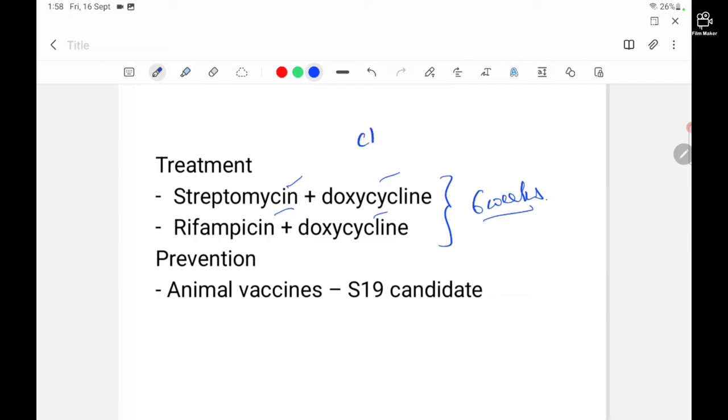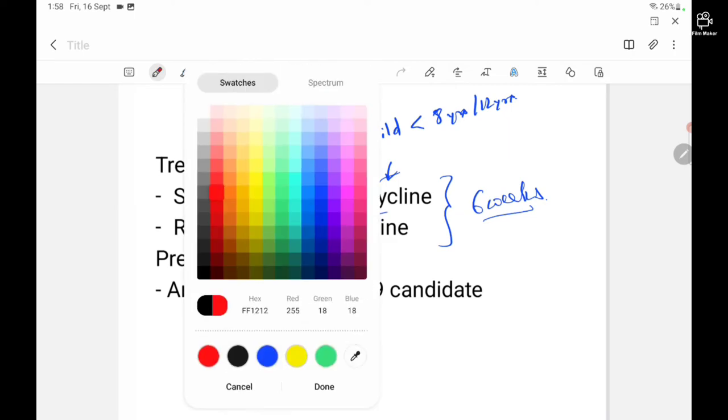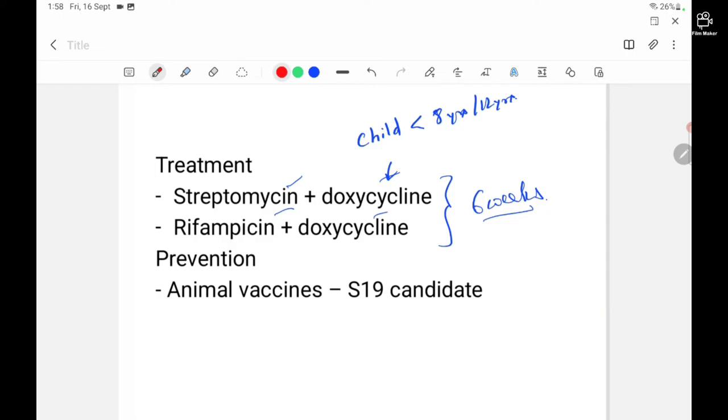Now there is one question: if there is a child infected by Brucella, and the child is less than eight years or 12 years, will you give doxycycline? No, you cannot give doxycycline to such a young individual because doxycycline restricts bone development in young individuals. So you have to go for other antibiotics.